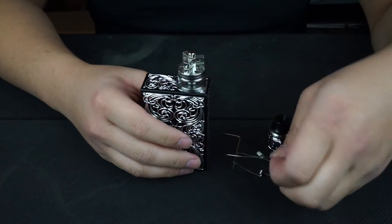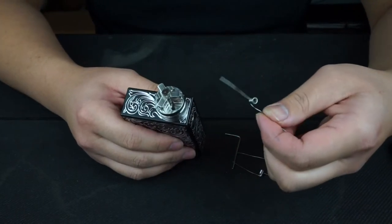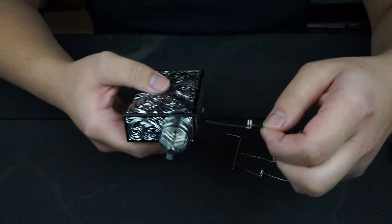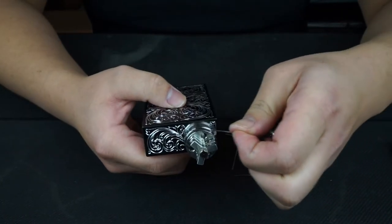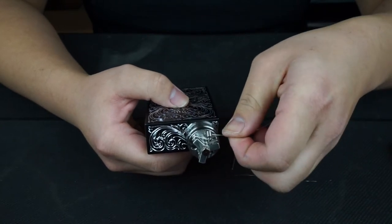So first you need to build your coils. Today I'll be using a 24 gauge 9 wrap on the Triad Genesis and I'll be using all three coils. And then first you're going to install your coils like this or like this, doesn't matter.